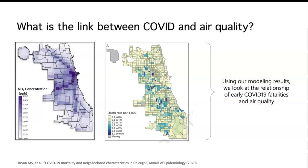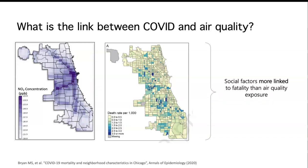We take this neighborhood-scale air quality analysis and put it in as inputs to compare census tract information to the air quality data. Not to get ahead of Molly's punchline, but to finish up this air quality section — we actually find that social factors are more linked to fatality than air quality exposure, which is a little different than what other studies have found. This is a vastly changing field, and we're using a completely novel dataset. I'll now hand it over to Molly to talk about the rest of our study.